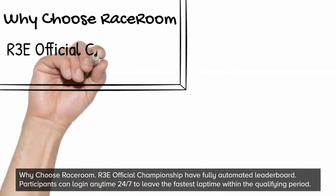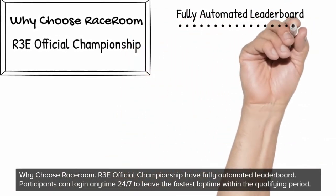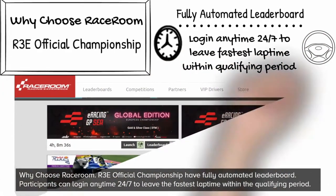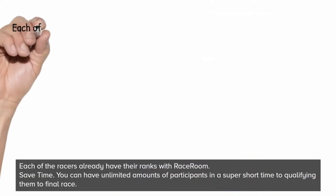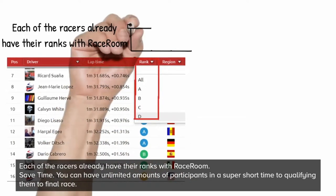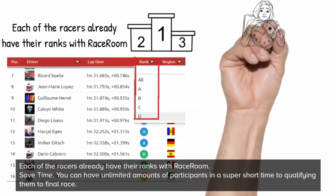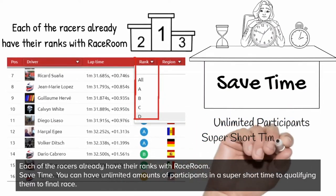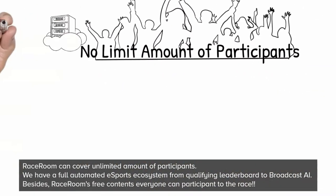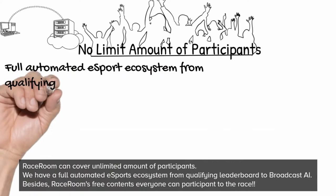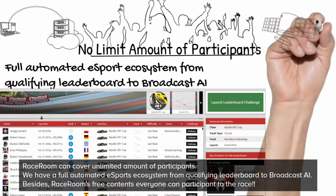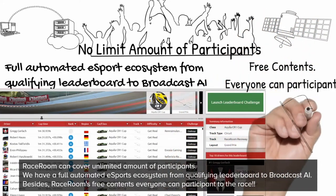Why choose Race Room? The R3E official championship has a fully automated leaderboard. Participants can log in anytime to post their fastest lap time within the qualifying period. Each racer already has their rank within Race Room. It saves time — you can have unlimited participants qualify in a very short time. Race Room can cover unlimited participants and has a fully automated e-sports ecosystem from the qualifying leaderboard to broadcast AI. Race Room's free content lets everyone participate in the race.